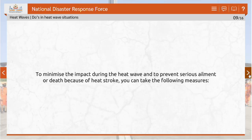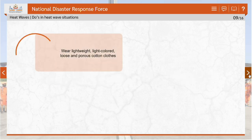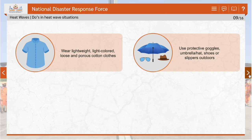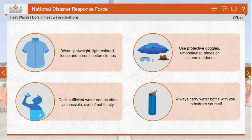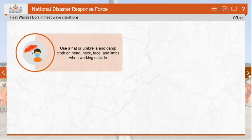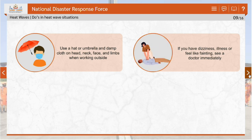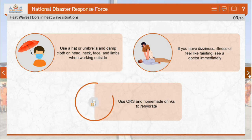To minimize the impact during a heat wave and prevent serious ailment or death from heat stroke, take the following measures: wear lightweight, light-colored, loose and porous cotton clothes; use protective goggles, umbrella or hat, and shoes or slippers while going out in the sun; drink sufficient water as often as possible even if not thirsty, and always carry a water bottle if you work outside; use a hat or umbrella and apply a damp cloth on your head, neck, face and limbs. If you have dizziness, illness or feel like fainting, see a doctor immediately. Use ORS, homemade drinks like lassi, taurani or rice water, lemon water, buttermilk, etc., which help rehydrate the body.